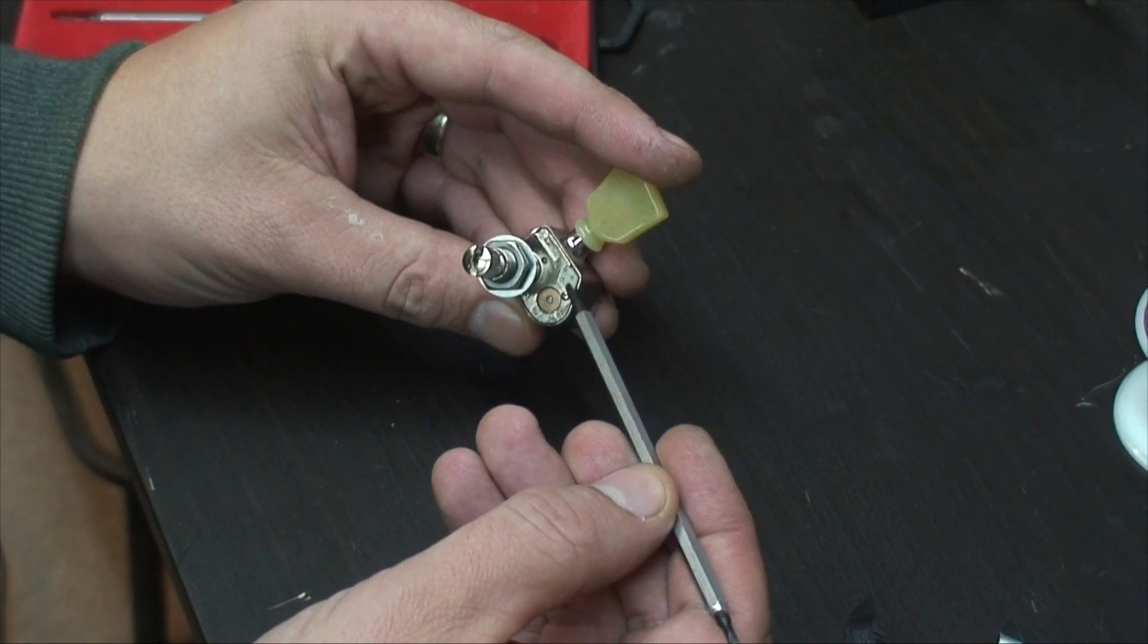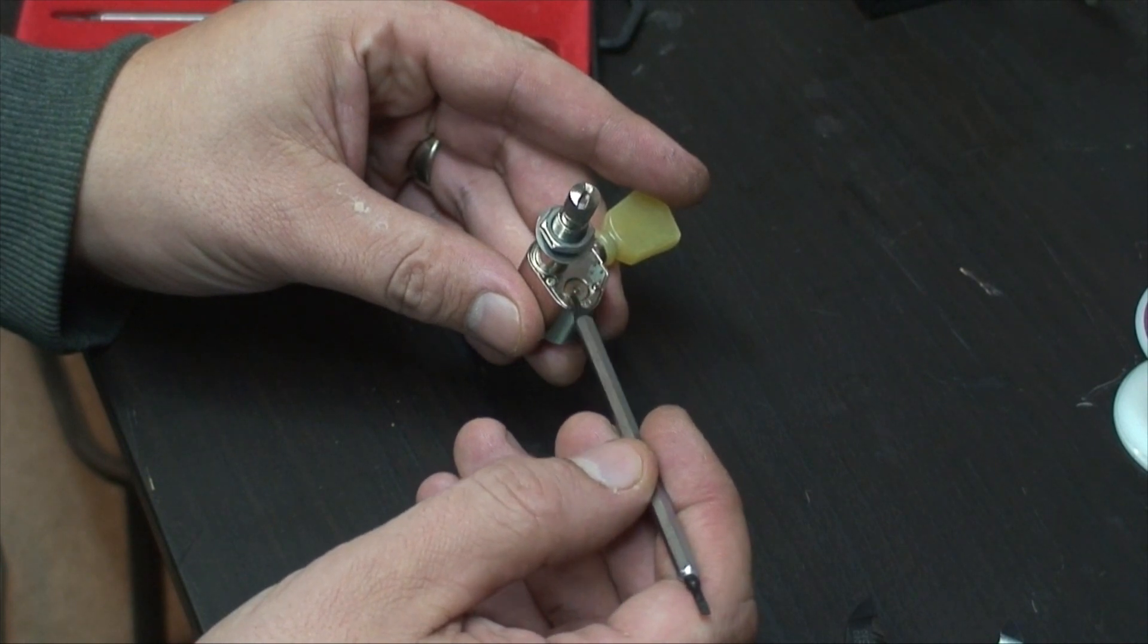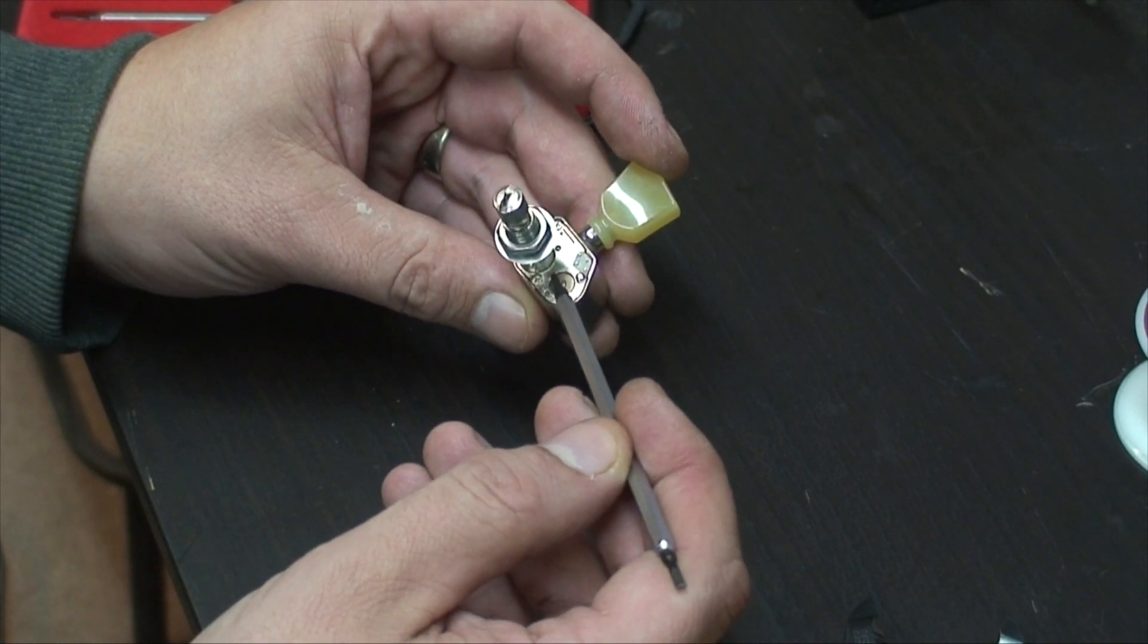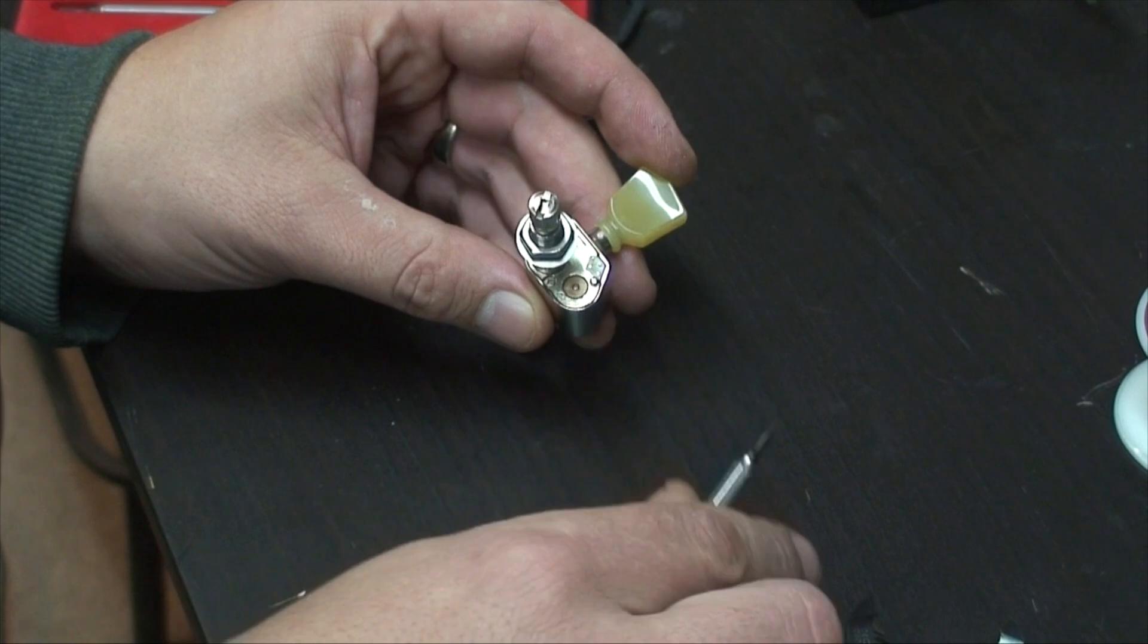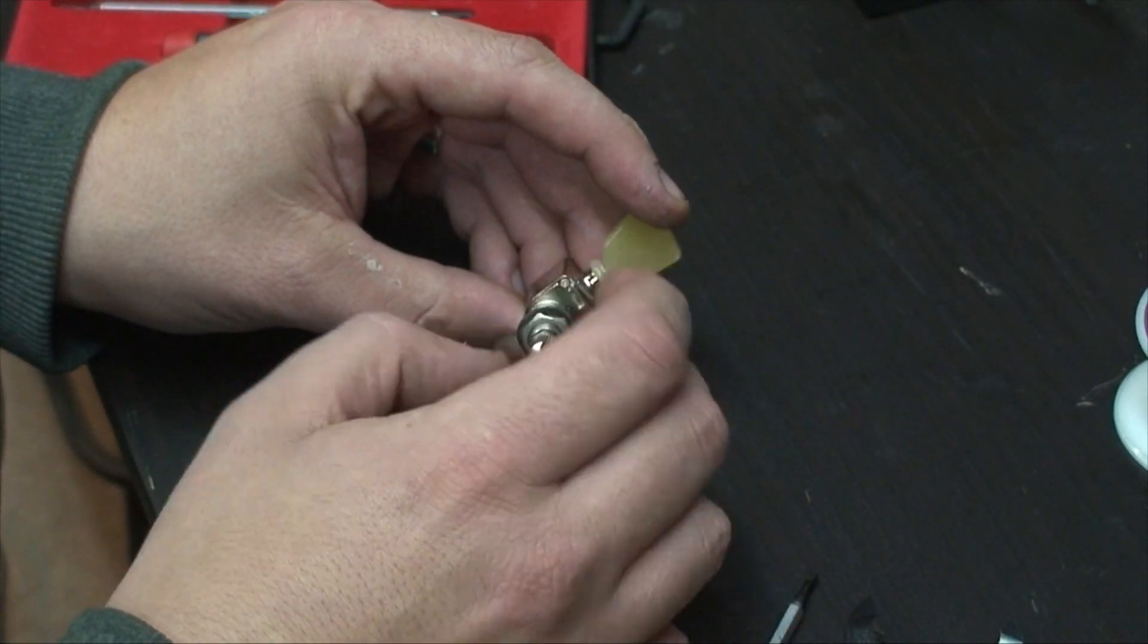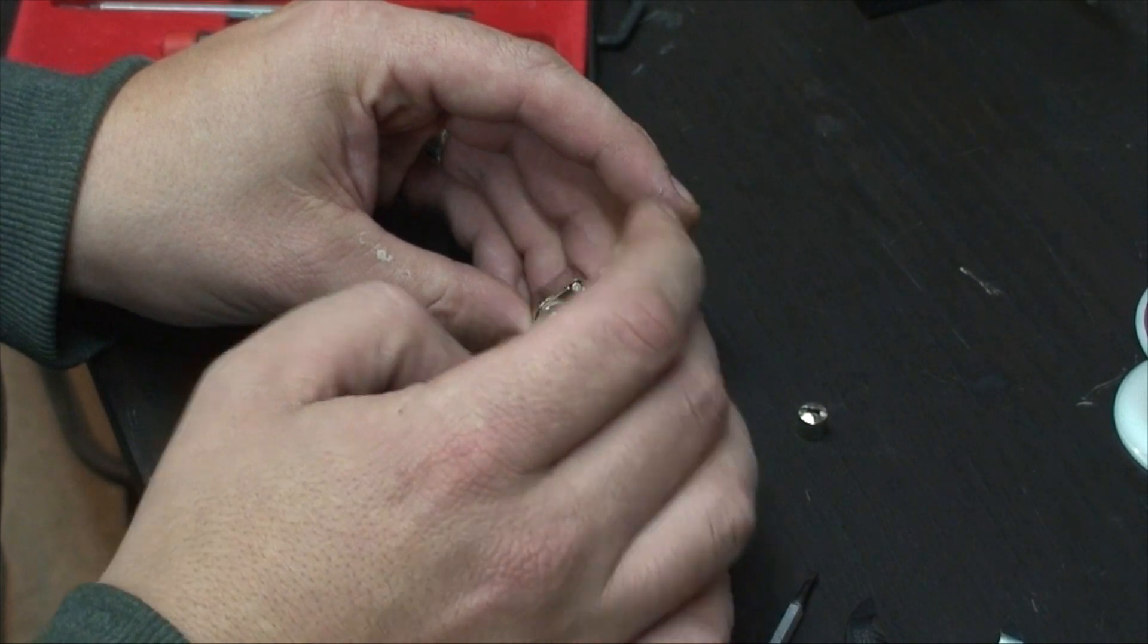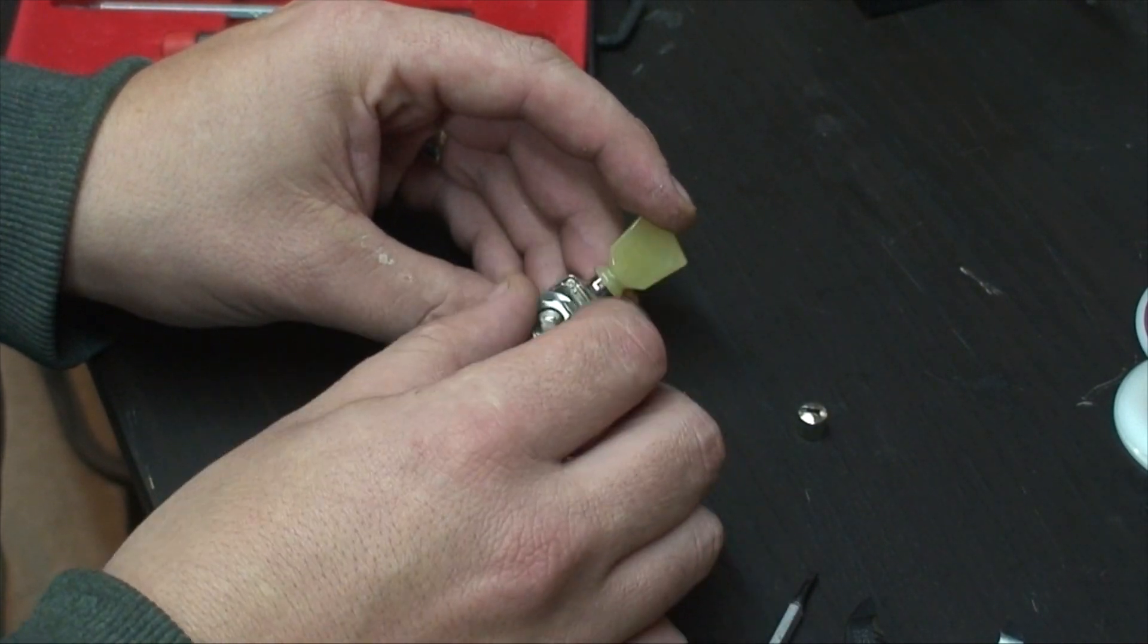So if we look here, there are four contacts, and I assume this is like a grounding point or something like that because there's also contact on the back of the board. Now I don't have the board unfortunately, that's gone now, but what I want to do in this video is see if I can take this apart and see what's inside.